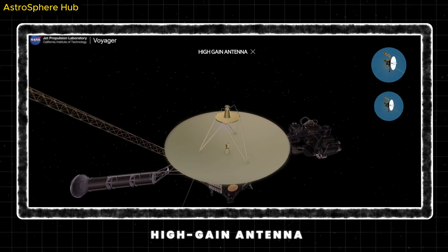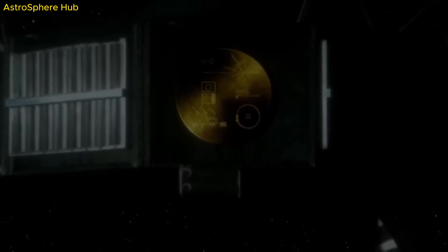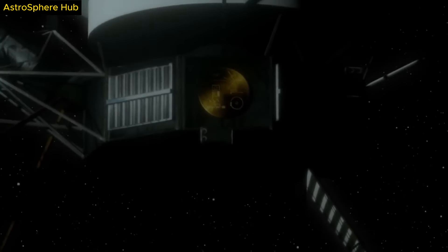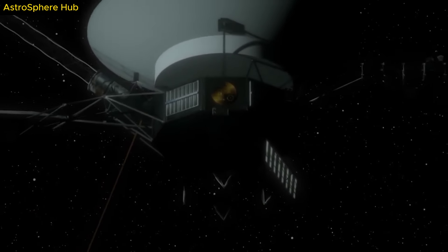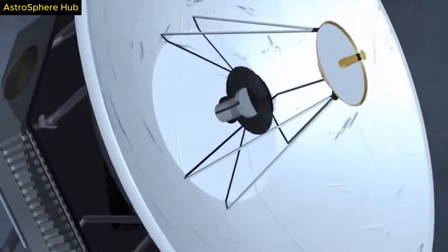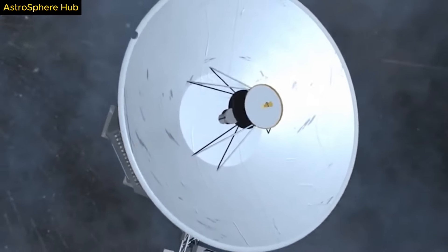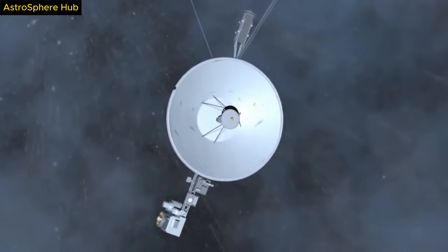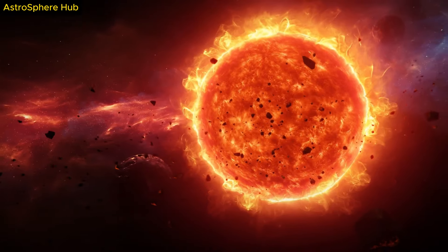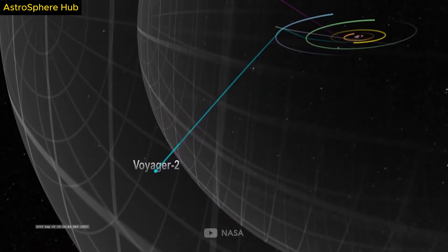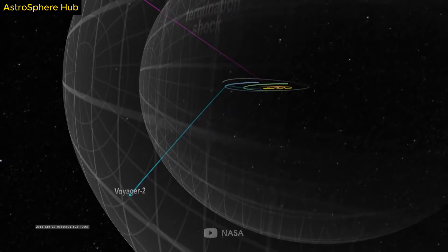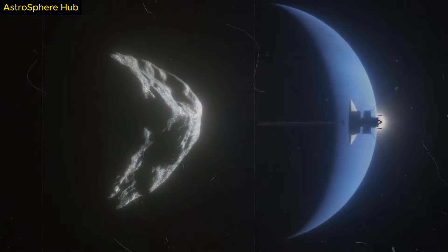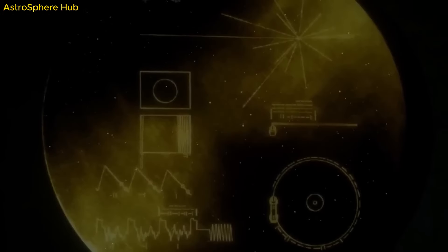It's certainly worth mentioning that the content was curated by a committee chaired by the late great Carl Sagan, the astronomer, cosmologist, and science communicator. The records are made of gold-plated copper and are designed to withstand the rigors of space travel for billions of years. Each record is encased in an aluminum cover with instructions for playback engraved on the outside, including information on how to build a stylus and a cartridge to play the records, as well as a diagram showing the location of the Sun relative to 14 pulsars, which can be used to determine the time and place of origin of the spacecraft.